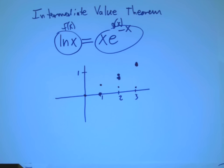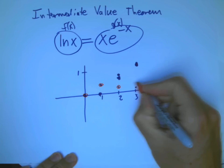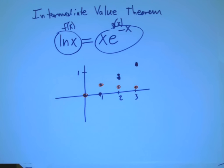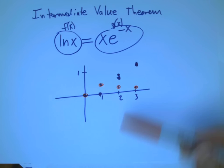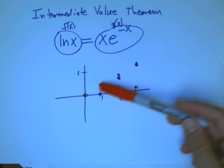Suppose these four points were the only points I knew for that function. Let's think about that. Actually, let's use some colors. I'm going to circle them in red. So these are the xe to the x ones.